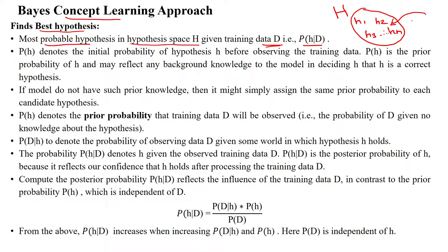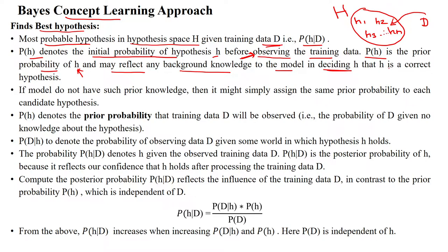These hypotheses are derived from or calculated from the given input dataset D. The probability of H denotes the initial probability of hypothesis H before observing the training data. It is the prior probability of hypothesis H, and it may reflect any background knowledge to the model in deciding that H is the correct hypothesis.